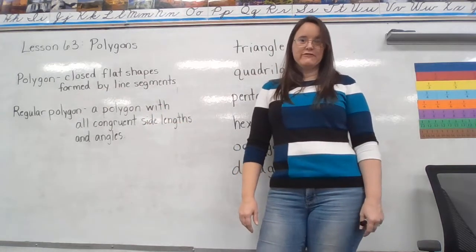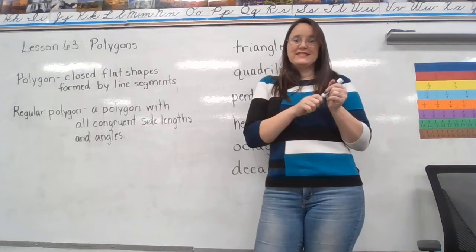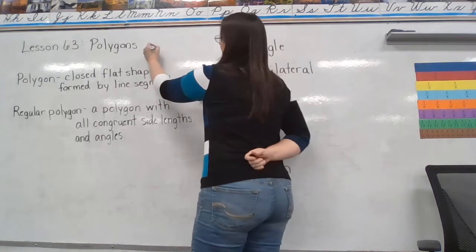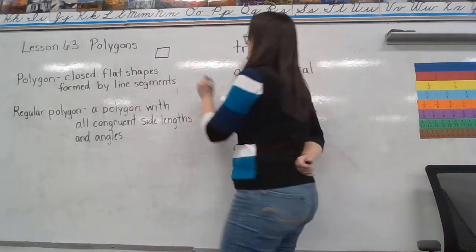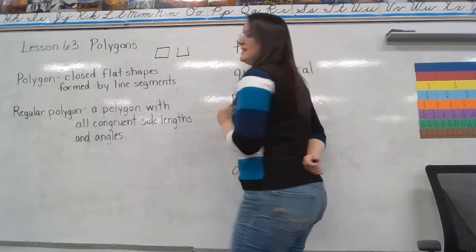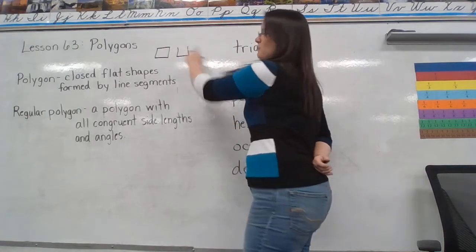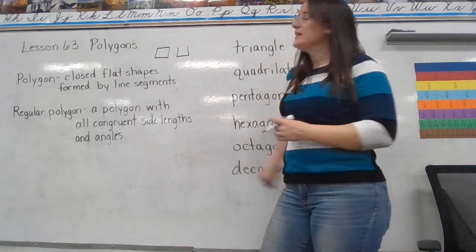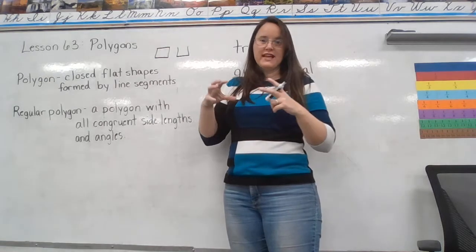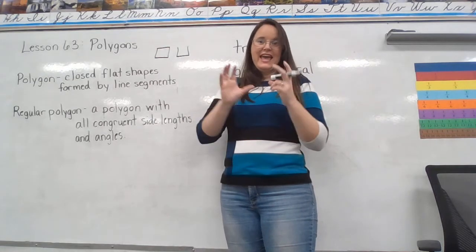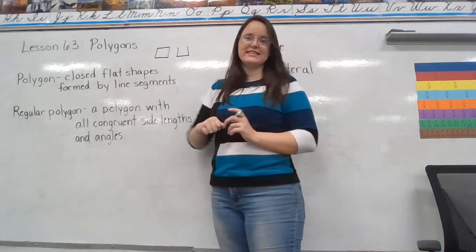What does it mean for a shape to be closed? It means there's no open spaces. This is a polygon; this is not a polygon because it's got this open space. A polygon must be closed, meaning all the line segments connect and it creates a shape of some sort.